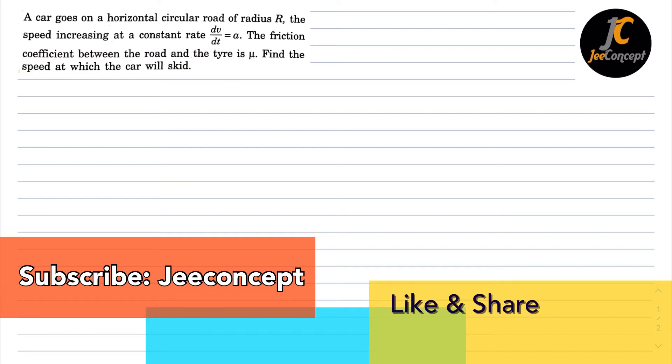Hello friends, in this video we will try to find the solution of a problem which says a car goes on a horizontal circular road of radius R, the speed increasing at a constant rate dv/dt is equal to a, the friction coefficient between the road and the tire is μ, find the speed at which the car will skid.